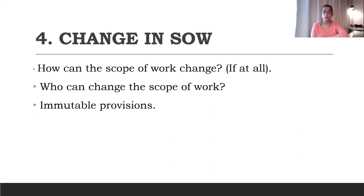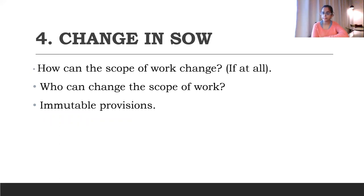Now, changes in the scope of work. It could be that the parties started with a different understanding and now want to amend the scope of work. The master services agreement would typically have a clause about amendment, but that amendment needs to be reflected in the statement of work as well. The parties need to decide whether the scope of work can change or not; if yes, what is the process and how can it be changed, and who can change it — whether it's based on mutual agreement or whether there is a unilateral change. If you are representing either of the parties, you need to look out for a unilateral change because that is something which should not be acceptable. Also, the process of change in the SOW and in the MSA should be synonymous with each other and not different. There could also be certain provisions which are immutable or unchangeable, so you need to decide whether you would want such provisions built into your statement of work.